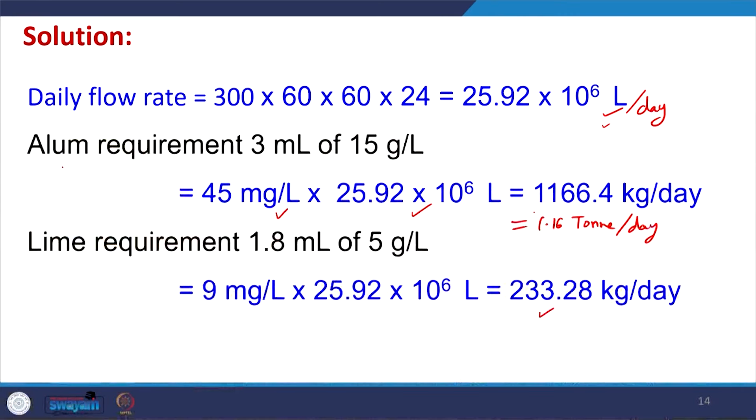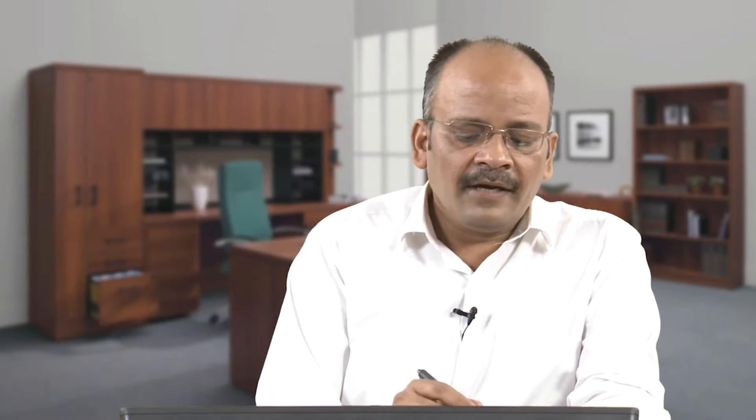We found that for each dose of alum we are also adding lime. The question arises: why are we adding lime? Why should alum not have been enough? In the actual condition, when alum is added and some alkalinity is present in the water, it will react with that alkalinity to form aluminum hydroxide via the reaction. When alum is added to water containing alkalinity, the reaction shifts the carbonate equilibrium and decreases the pH.